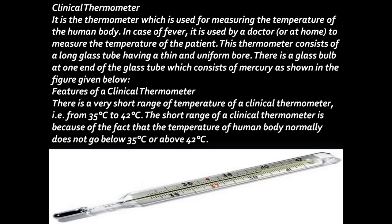Look at this given image. This thermometer consists of a long glass tube having a thin and uniform bore. There is a glass bulb at one end of the glass tube which contains mercury. The range of this thermometer is very short — between 35 to 42 degrees Celsius. This short range is because the temperature of the human body normally does not go below 35 degrees Celsius or above 42 degrees Celsius.